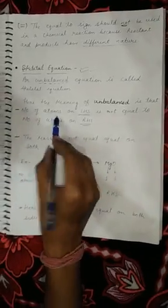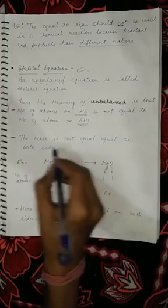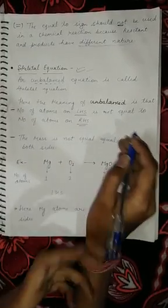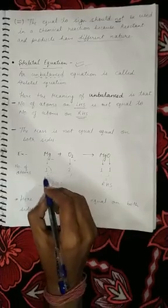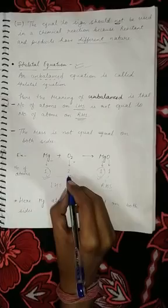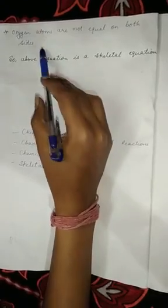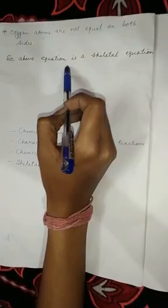Also, if the number of atoms is not equal on both sides, then the mass is also not equal on both sides. We can see that oxygen atoms are not equal on both sides, so the equation Mg + O₂ → MgO is a skeletal equation.